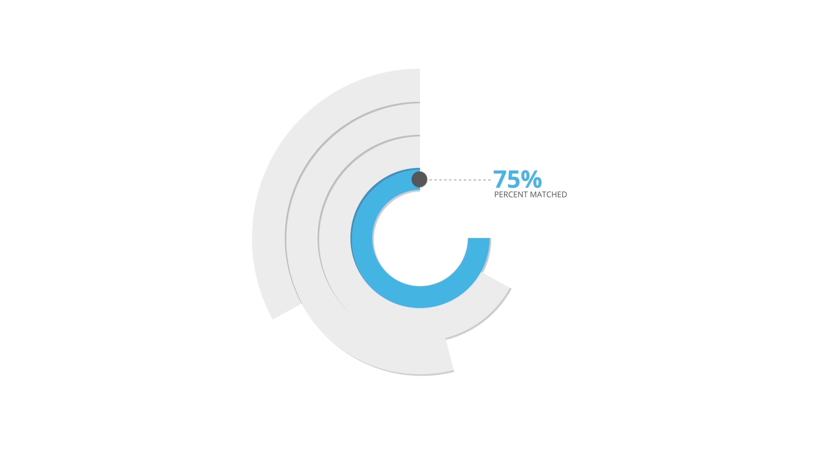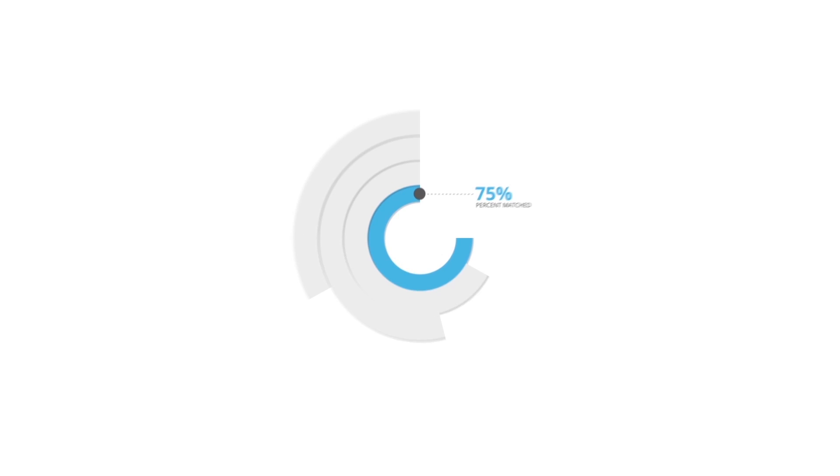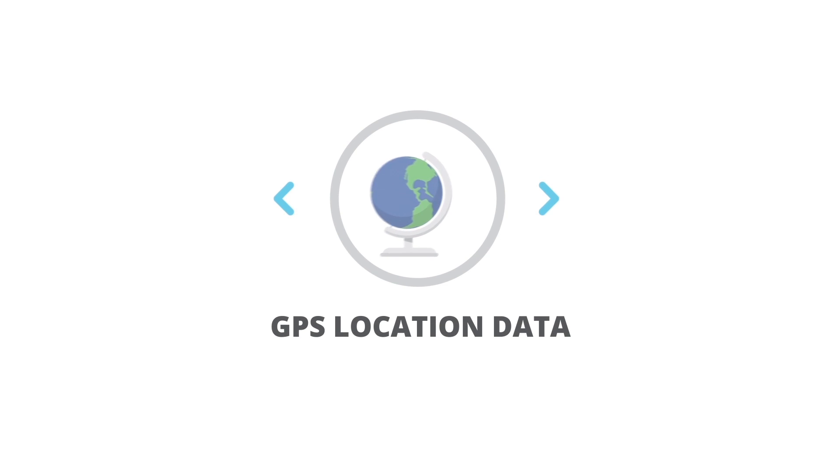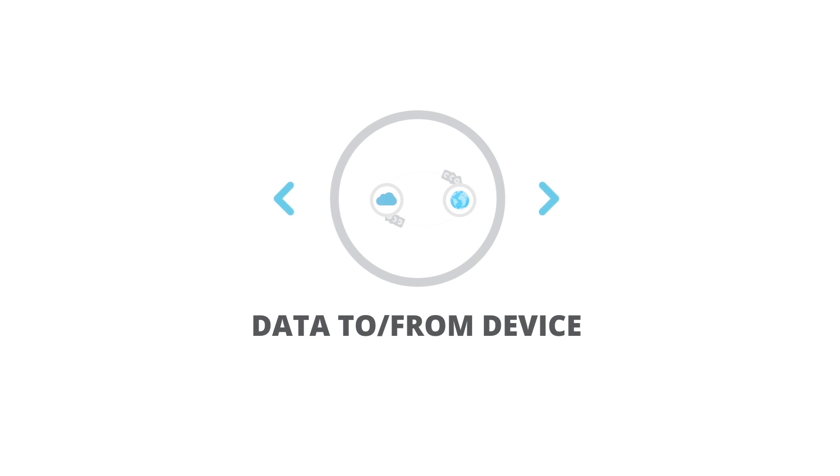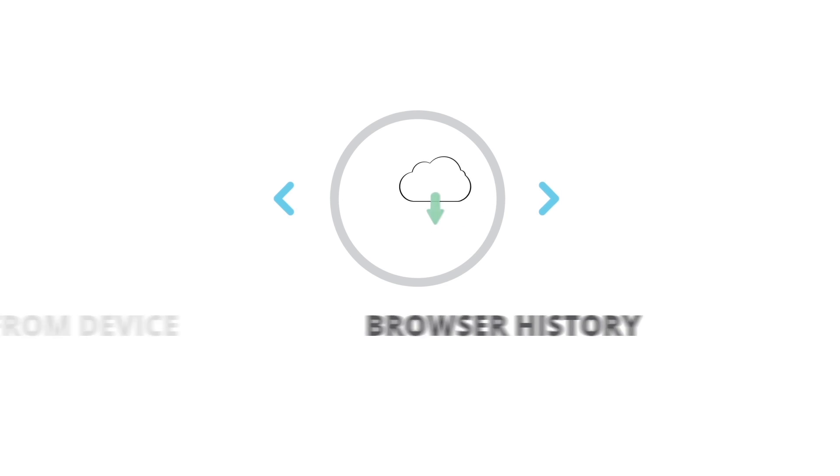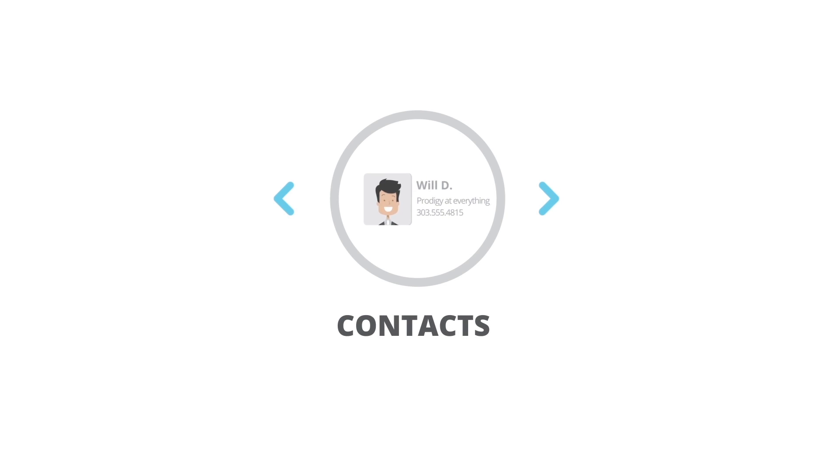What kind of information will we collect about you to make this work? We collect your GPS location data, credit card information, data sent to and from your device, browser history, contacts, calendar and camera.